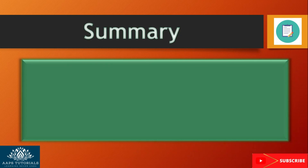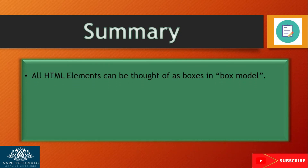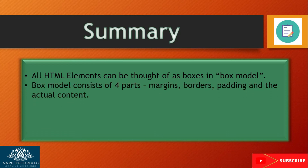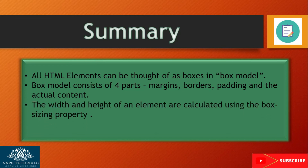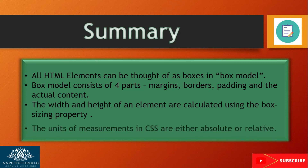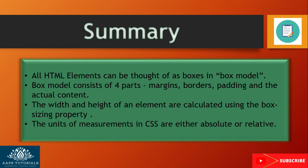Finally, I would like to conclude with the following points. All elements can be thought of as boxes in the box model. Box model consists of four parts: margin, border, padding, and the actual content area. The width and height of an element are calculated using the box sizing property. The units of length measurements in CSS are either absolute or relative.